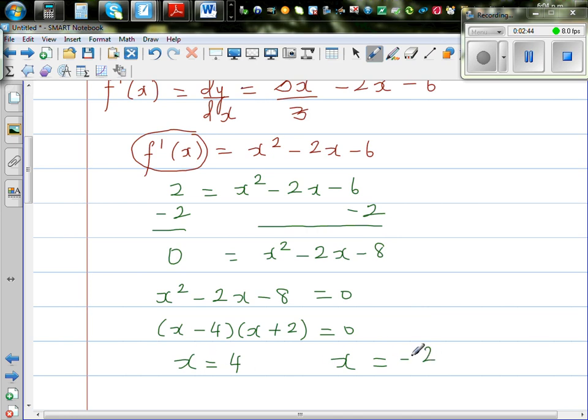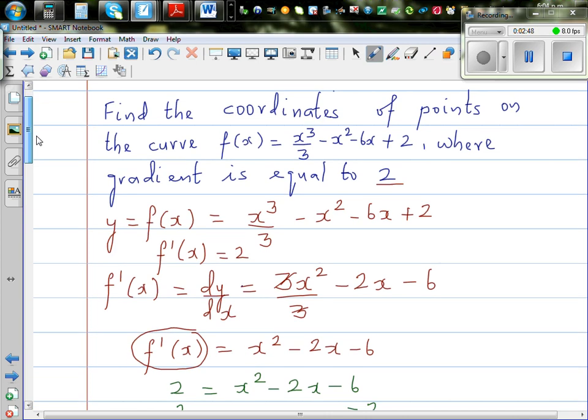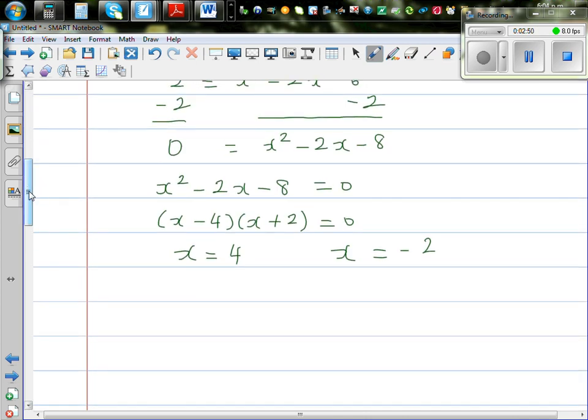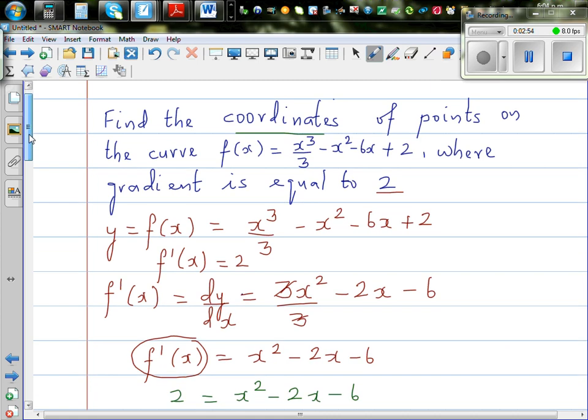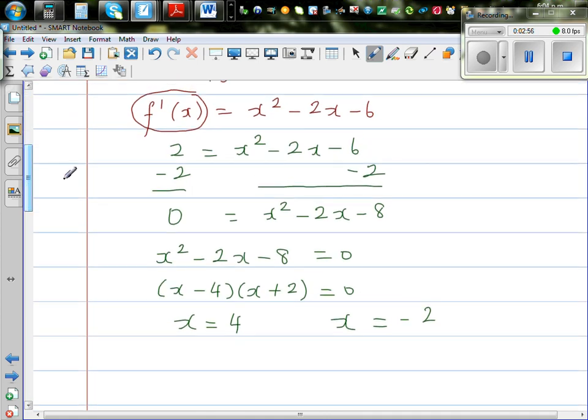So when x is 4, or x is negative 2, your gradient is 2. But the question is, we want to find the coordinates of the points. We only found x, we need to find y.